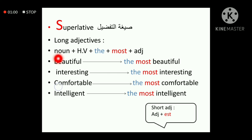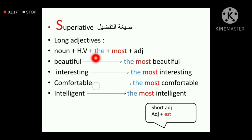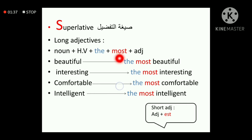The superlative sentence always starts with a noun — the noun is the thing or party I'm comparing. Then comes a helping verb: 'is' for singular, 'are' for plural. Then 'the' — we always have 'the' in the superlative form. After that comes 'most' with the long adjective. With long adjectives, we use 'most.'